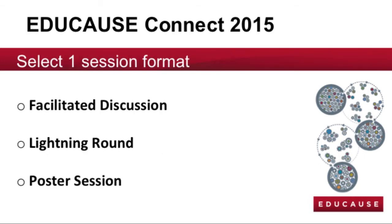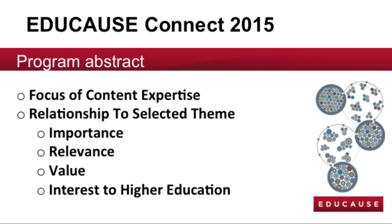Select a session format. Facilitated sessions are 60 to 75 minutes each and involve multiple content leaders. Lightning rounds are 45 minutes and will involve brief talks from many content leaders. Poster sessions are open for 60 minutes and involve multiple participants. Your abstract will describe the focus of your content expertise and how it relates to the top 10 IT issues and learning theme you selected.